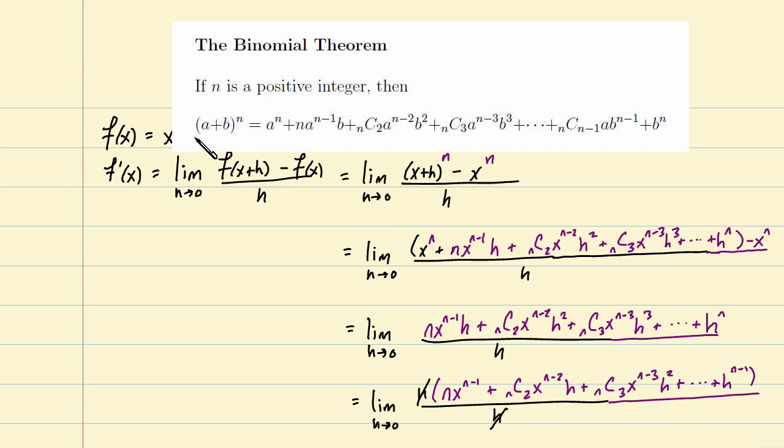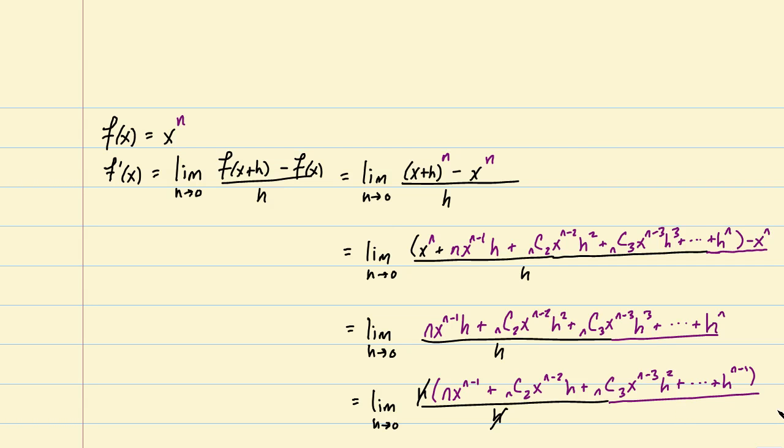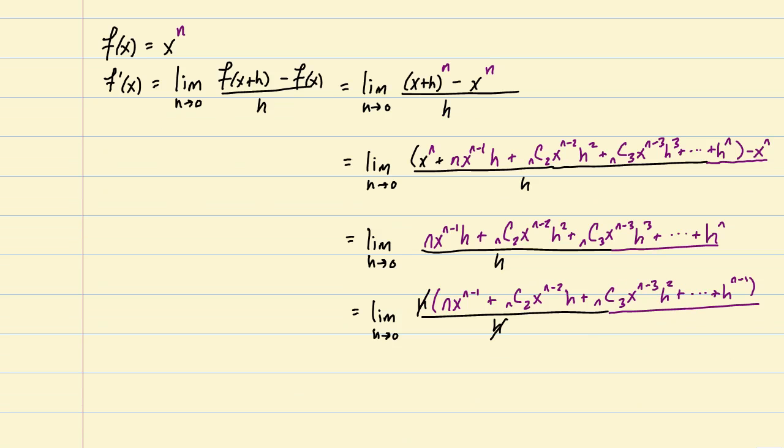We have simply that term, right? That's the only thing that's left: n times x to the n minus 1. Now, if we simply annotate up here a little bit by saying that this expansion resulted by applying the binomial theorem, we now have a proof of how to find derivatives of x to the n provided—